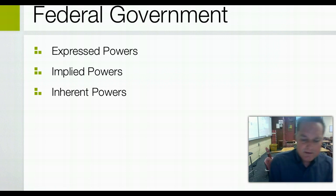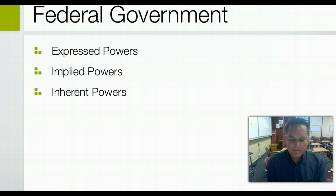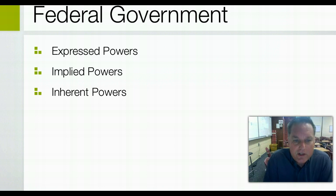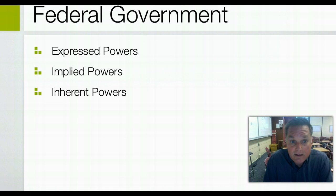When the colonies declared their independence from Britain in 1776, they reacted against the British unitary system in which all political and economic power was concentrated in London. Although the British did not impose this power consistently until after the French and Indian War in 1763, new controls on the colonial government in the late 1760s and early 1770s before the Revolutionary War became a major source of friction that led to that war.